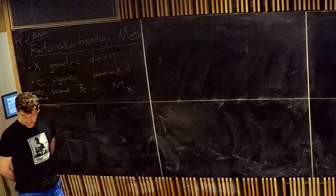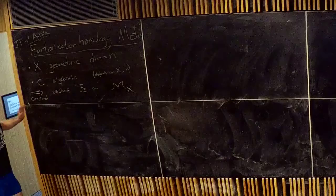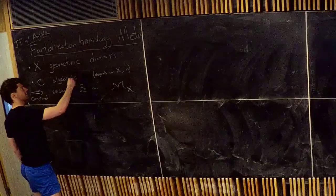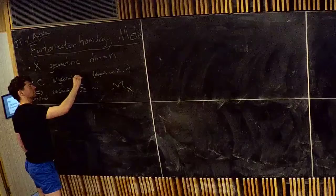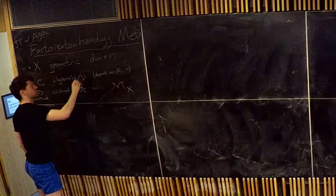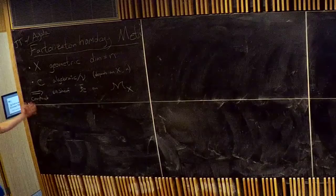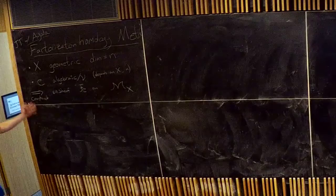Everything is a sheaf or co-sheaf — or the global sections thereof — of something on M_X. There's some auxiliary space, which may be complicated or not. C will be algebraic, relative to some V. V could be chain complexes, or V could be homotopy types or spaces. Once you do this, you can define factorization homology.